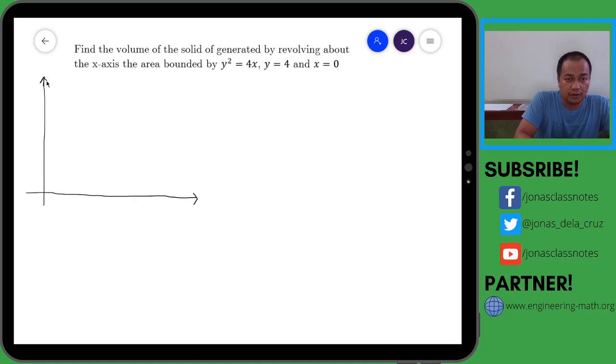First, let us draw the graph of y squared equals 4x. So basically this is a parabola that opens to the right, and the parabola that opens to the right and bounded by y equals 4.